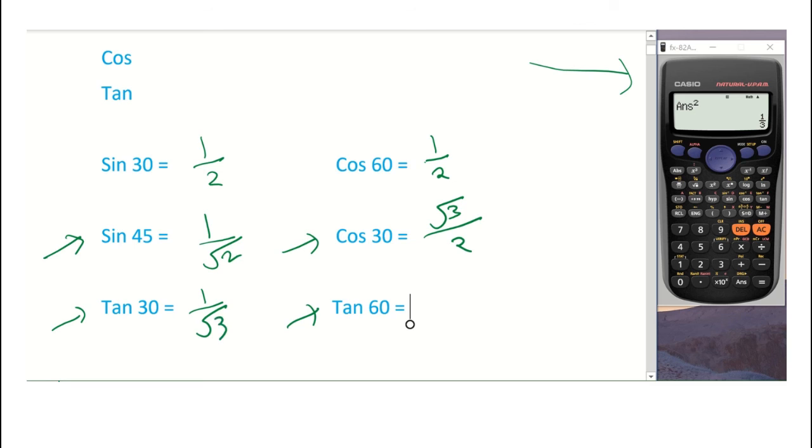Now the last thing, let's say if it is tan 60. You can do the same thing, you can do the square of the answer and then it's 3. You don't need to press sd button because already it's coming 3, but this is the square of the answer, so the answer is going to be root 3.